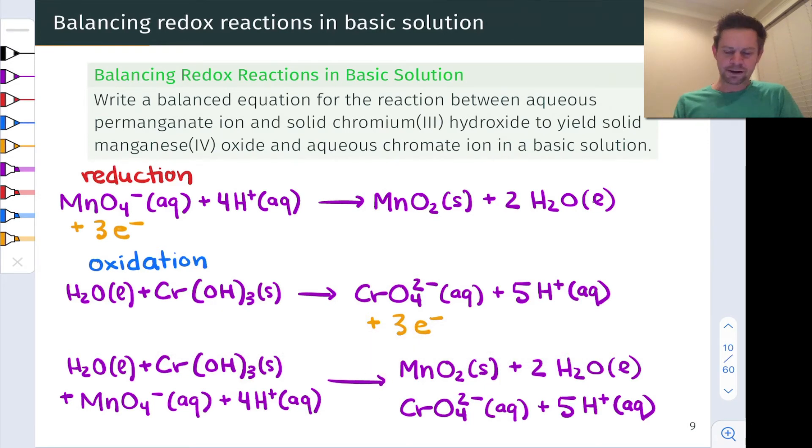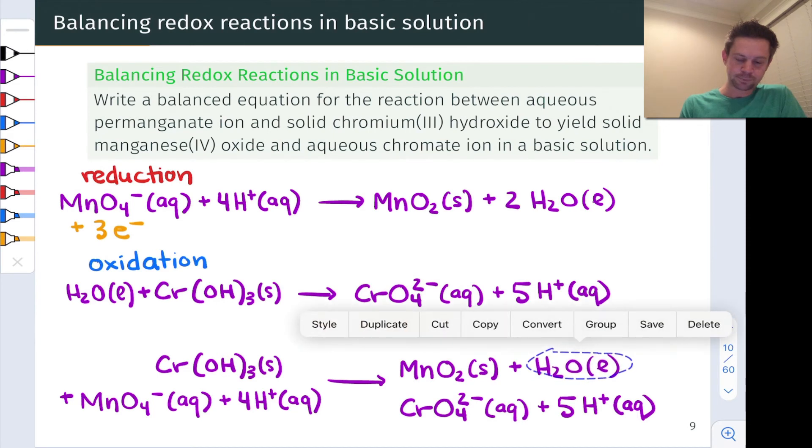All right. Now let's drop out any species that appear on both sides of the equation. I notice, for example, that there's a water on the left-hand side of the equation right here, and there are two waters on the right-hand side. So one of those water molecules is just a spectator, and I can actually remove it entirely from the left-hand side of the equation and drop this coefficient of two down to a one. That's going to make things simpler.